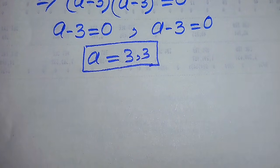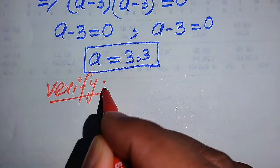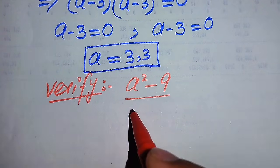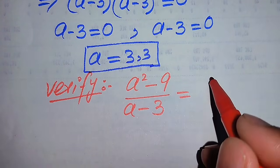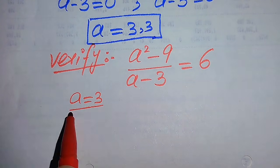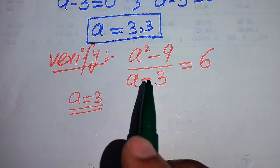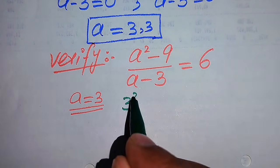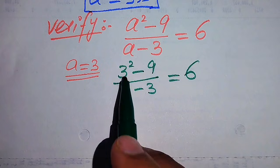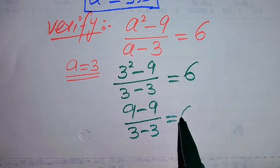Now we need to verify whether this root is a solution or an extraneous root. We copy the given equation: a² minus 9 divided by a minus 3 equals 6. We substitute a equals 3 into the left hand side and check its behavior. It becomes 3² minus 9 divided by 3 minus 3 equals 6, which gives 9 minus 9 divided by 3 minus 3 equals 6.